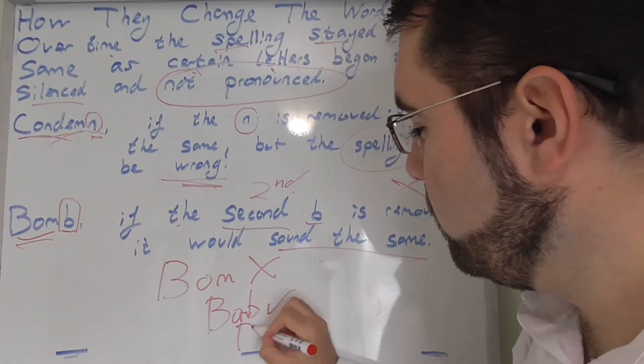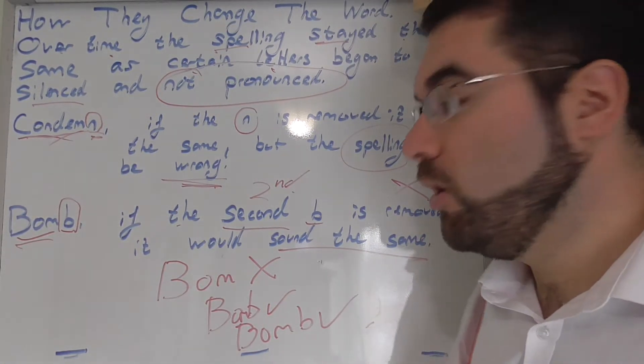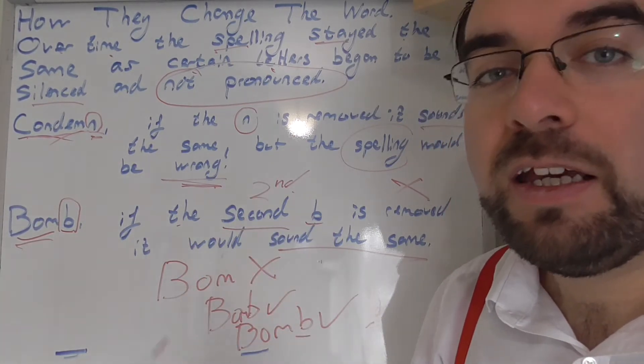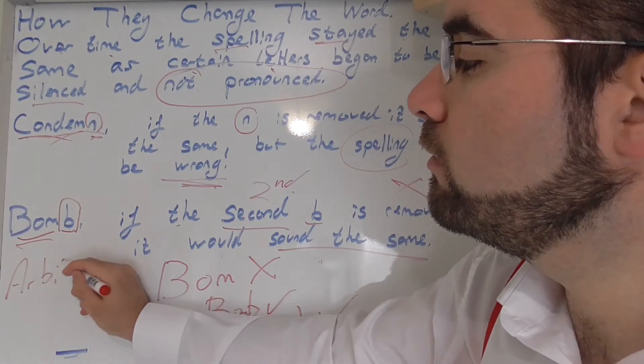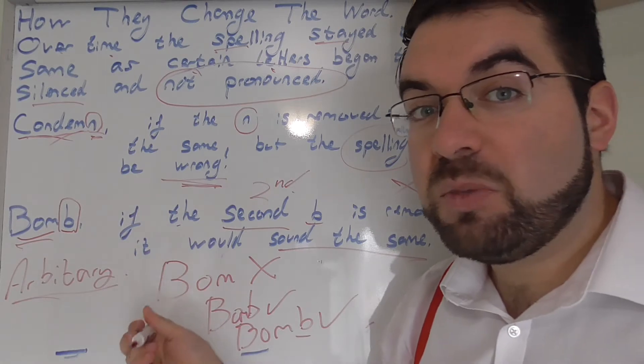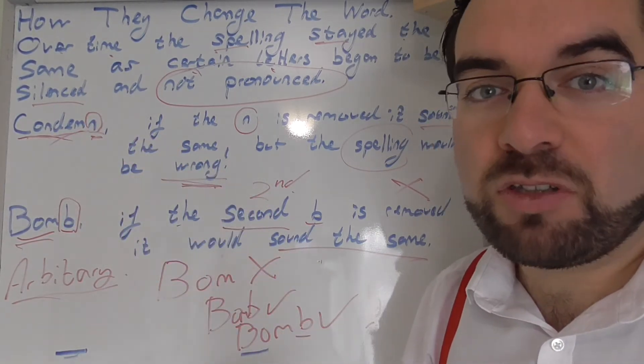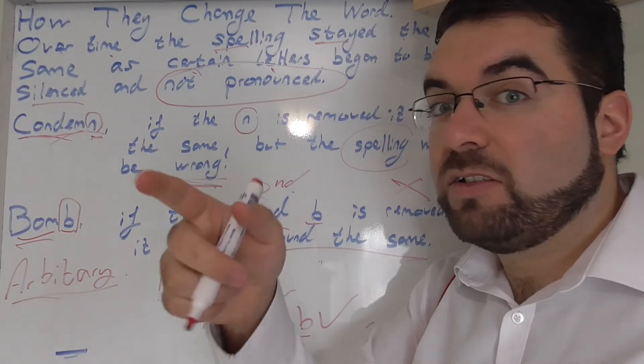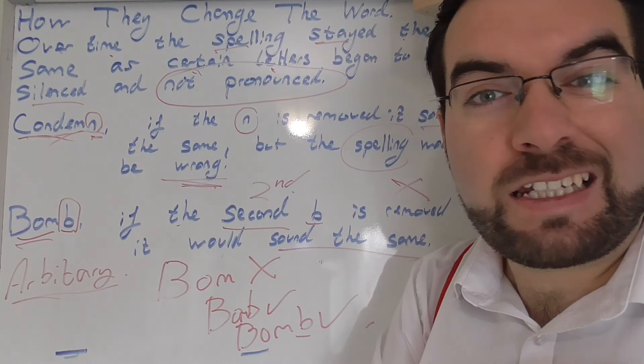That again. B-O-M-B. There we are. Bomb. With the second B. That's the correct spelling. Again, it's arbitrary. It is because someone said so. It is because they decided that was the rules. It is because this guy said, that's how you spell it. Bomb. It's got a silent letter in it.